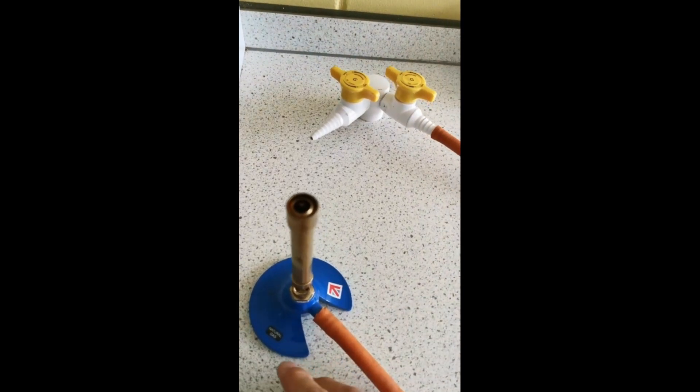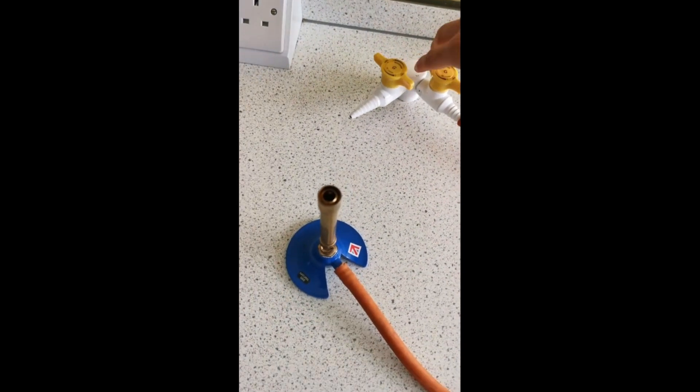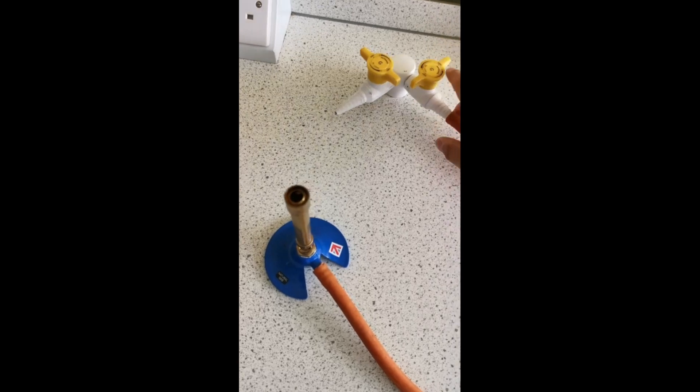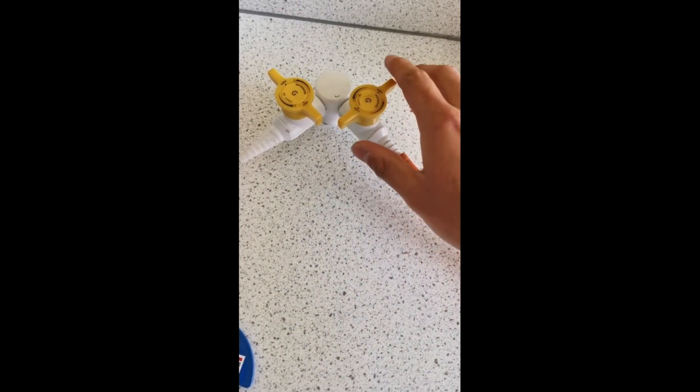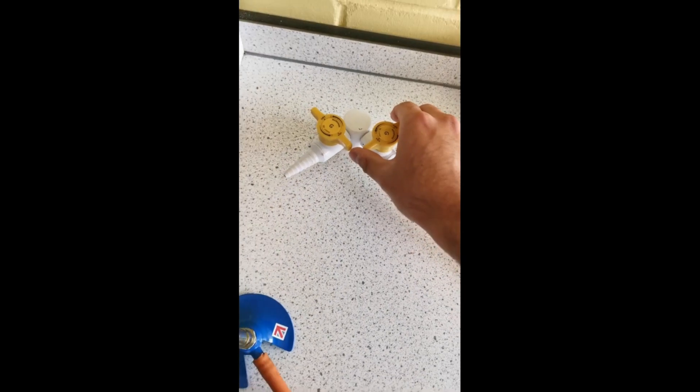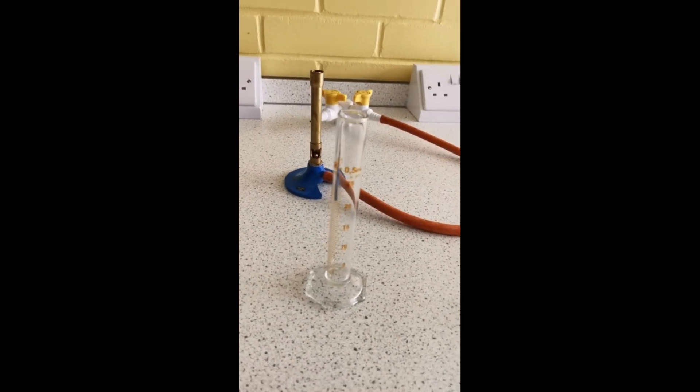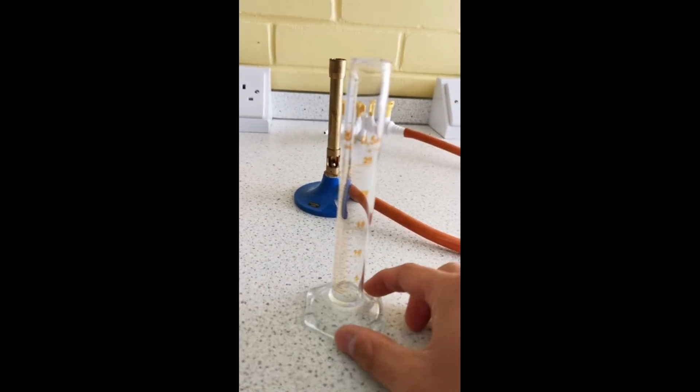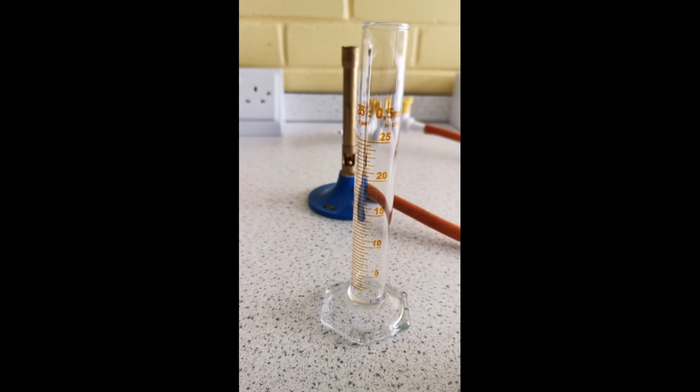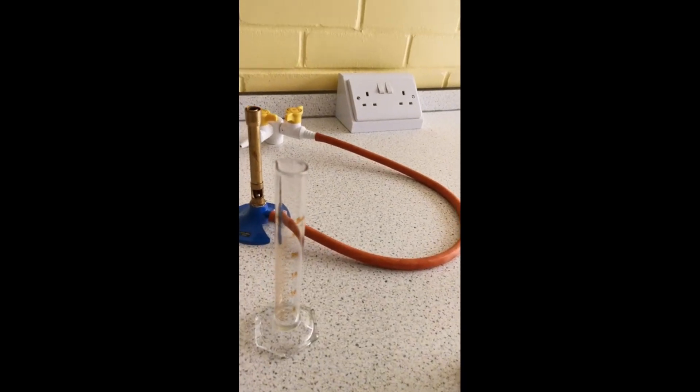You can hear it. To turn it off, twist it the other way. As you can see on the gas tap, it says on and off. Now we want to use five milliliters of water each time, and we're going to use this measuring cylinder to measure out those five milliliters.